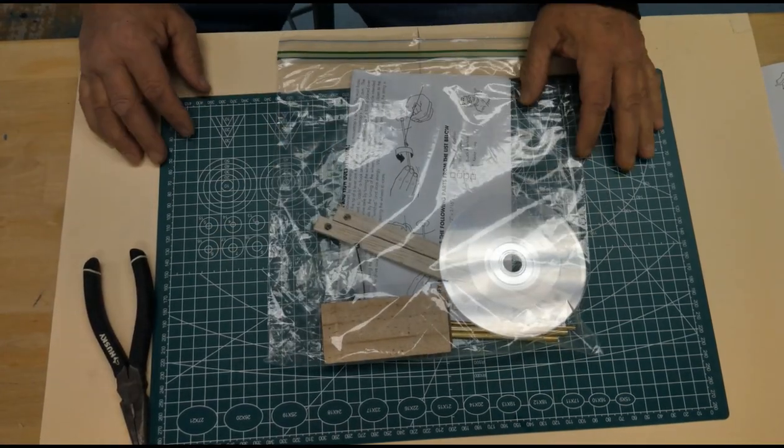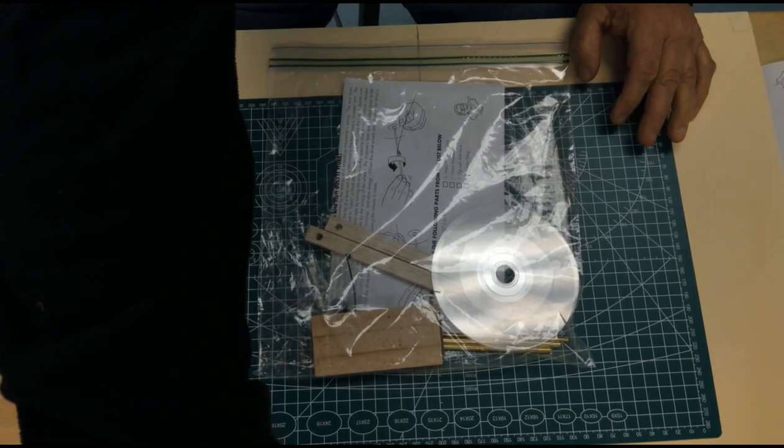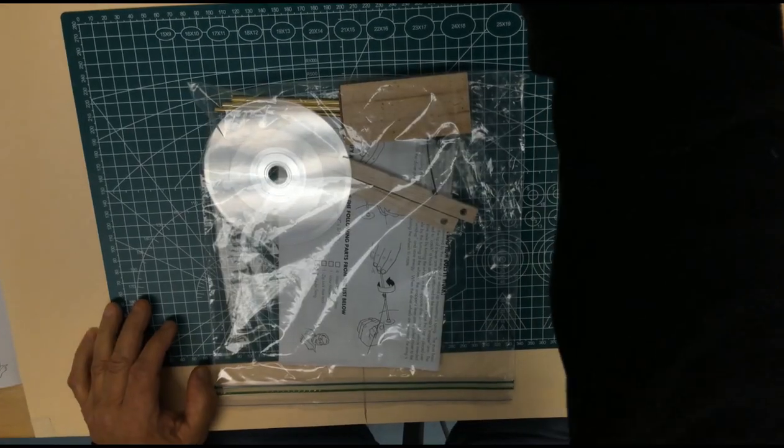And all we're going to need from this kit is the mousetrap and the long brass bar. We're going to start with just the mousetrap. So let me flip this around so top is top for you.